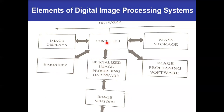Moving on to the computer. The computer used in an image processing system is usually a general purpose computer, but it can range from a personal computer to a supercomputer based on the applications. In some dedicated applications, specially designed computers are also used to achieve the required performance.